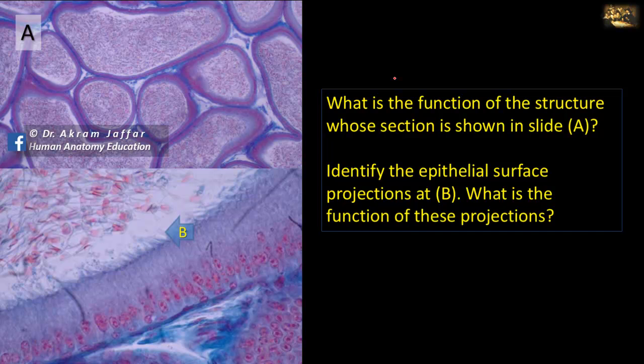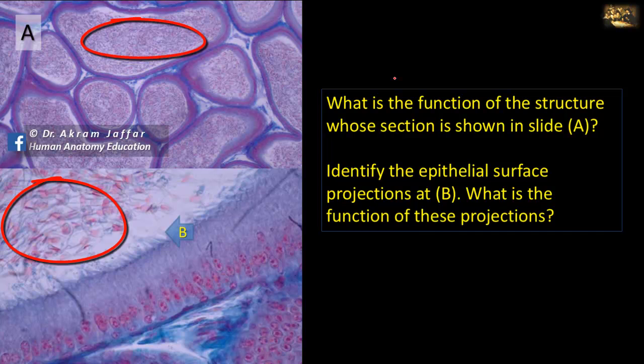What is the function of the structure whose section is shown in slide A? You can see that these are profiles of a highly convoluted tube — this is the epididymis. The function of the epididymis is the storage and maturation of sperms, which you can see are located in the lumen of the convoluted tube.